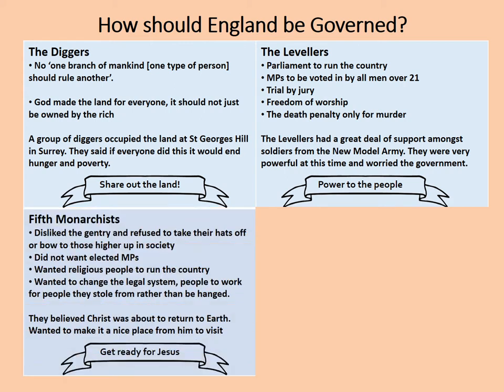The third group was the Fifth Monarchists — kind of the religious extremists of the group. The Barebone family were all Fifth Monarchists. They disliked the gentry and refused to take their hats off or bow to those higher up in society. They did not want elected MPs; instead they wanted religious people to run the country. They wanted to change the legal system so people would work for those they stole from rather than be hanged. They believed Christ was about to return to earth and wanted to make it a nice place for him to visit — basically, get ready for Jesus.